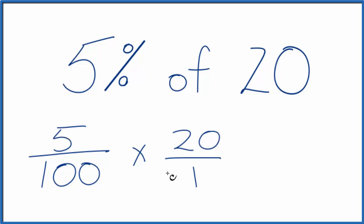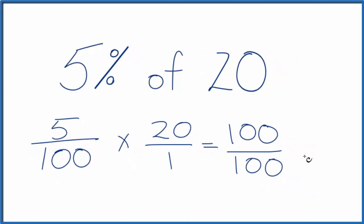Now we can multiply the numerators and then the denominators. 5 times 20, that equals 100. And then 100 times 1, that equals 100. If you divide 100 by 100, you end up with 1.